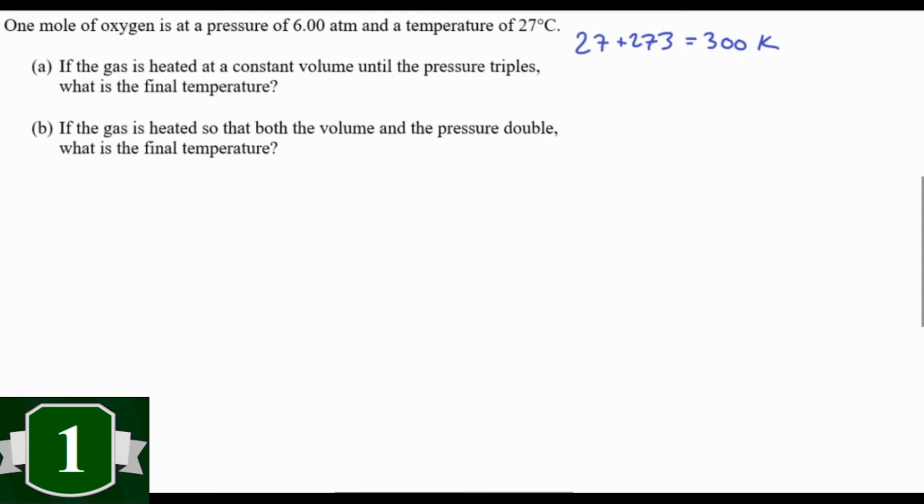Second, realize a bunch of this information doesn't matter. We don't care that it's one mole and we don't care that it's six atmospheres. All we care about is how things change. So let's apply the universal gas law: P1V1 over T1 equals P2V2 over T2. But the volumes are the same, so they cancel. Plug in three P1 to show that the pressure triples and solve for T2. You get 900 Kelvin, which is 627 degrees Celsius.